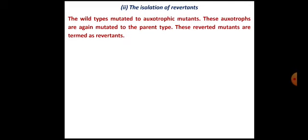Let us understand what a revertent is. The wild type or natural isolates, which are inferior producers, are first mutated to auxotrophic mutants, as we have seen in the case of the second type of modification. Wild type organisms, which we call prototrophs, are exposed to a mutagenic agent, and mutation happens. These organisms then lose their ability to synthesize a particular growth factor.